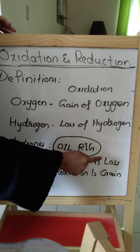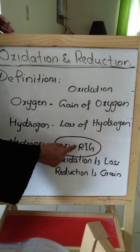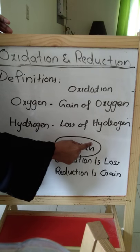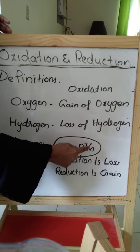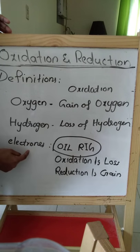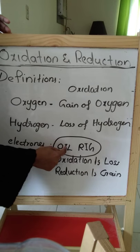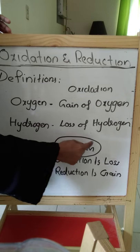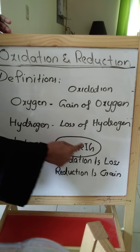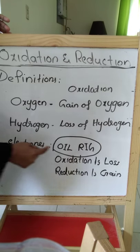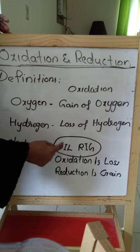The third definition is in terms of electrons. Remember the mnemonic OIL RIG: Oxidation Is Loss of electrons, Reduction Is Gain of electrons. Always remember OIL RIG — oxidation is loss, reduction is gain.